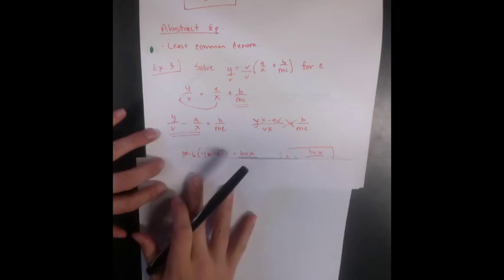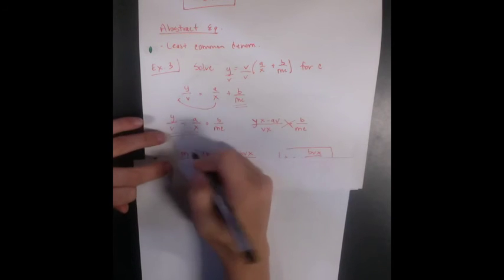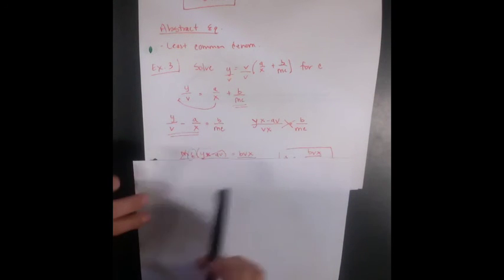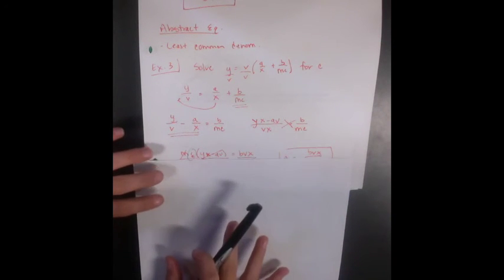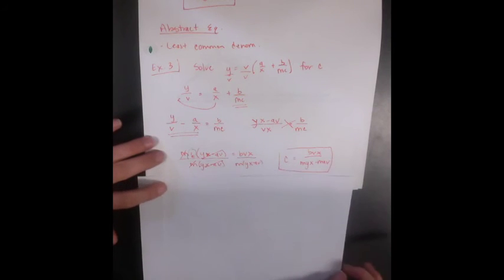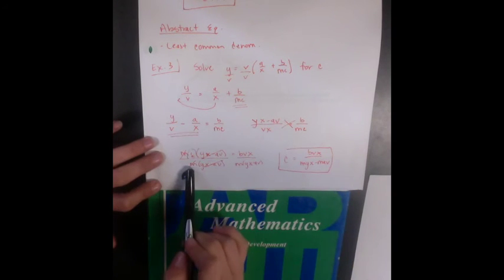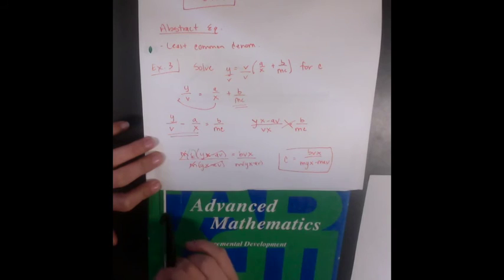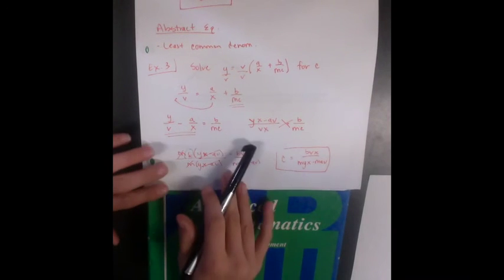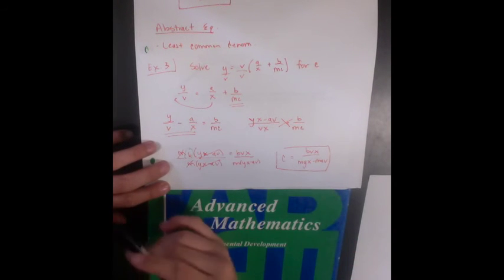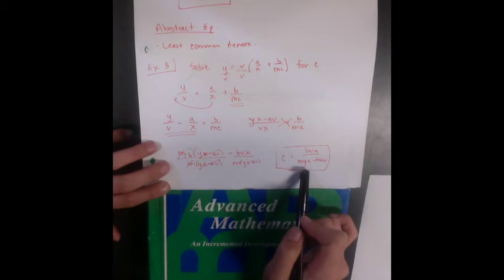Now I notice here I have c and a bunch of crap multiplied by c. So I'm going to divide by all that extra stuff we got going on. Divide by m times yx minus av on both sides, and I get c is bvx over myx minus mav.